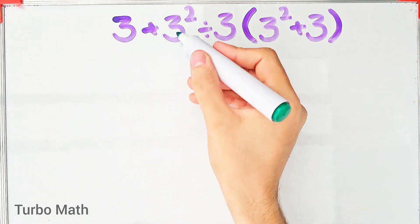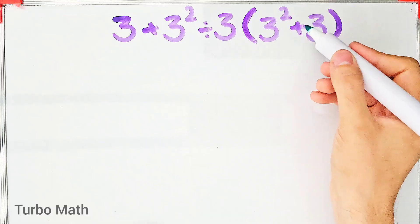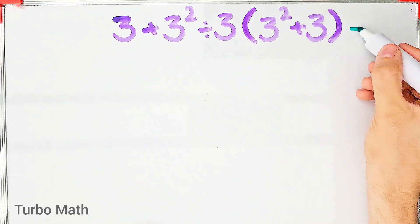3 plus 3 to the power of 2 divided by 3 then times 3 to the power of 2 plus 3. What is the answer of this question? Can you solve it?